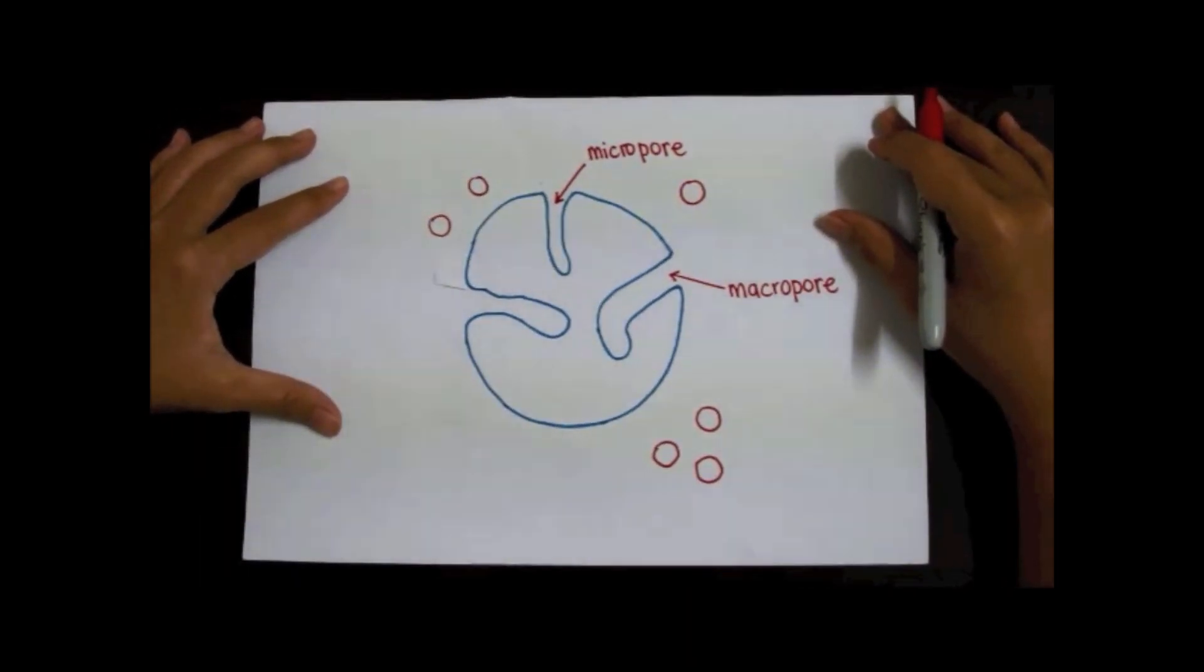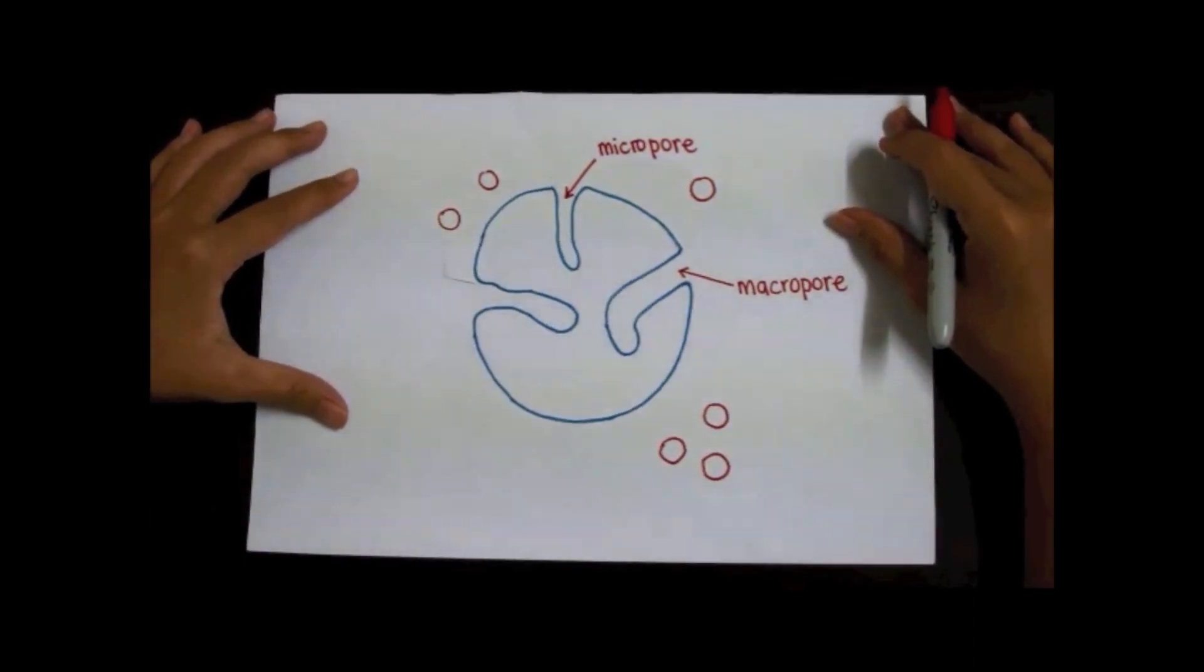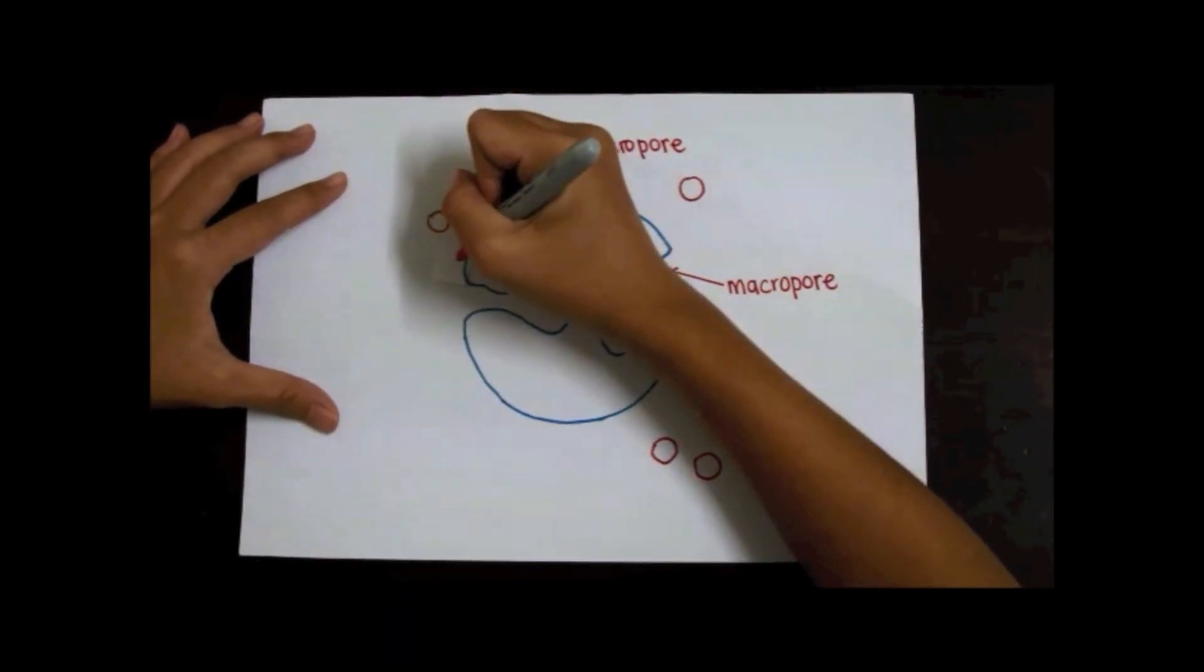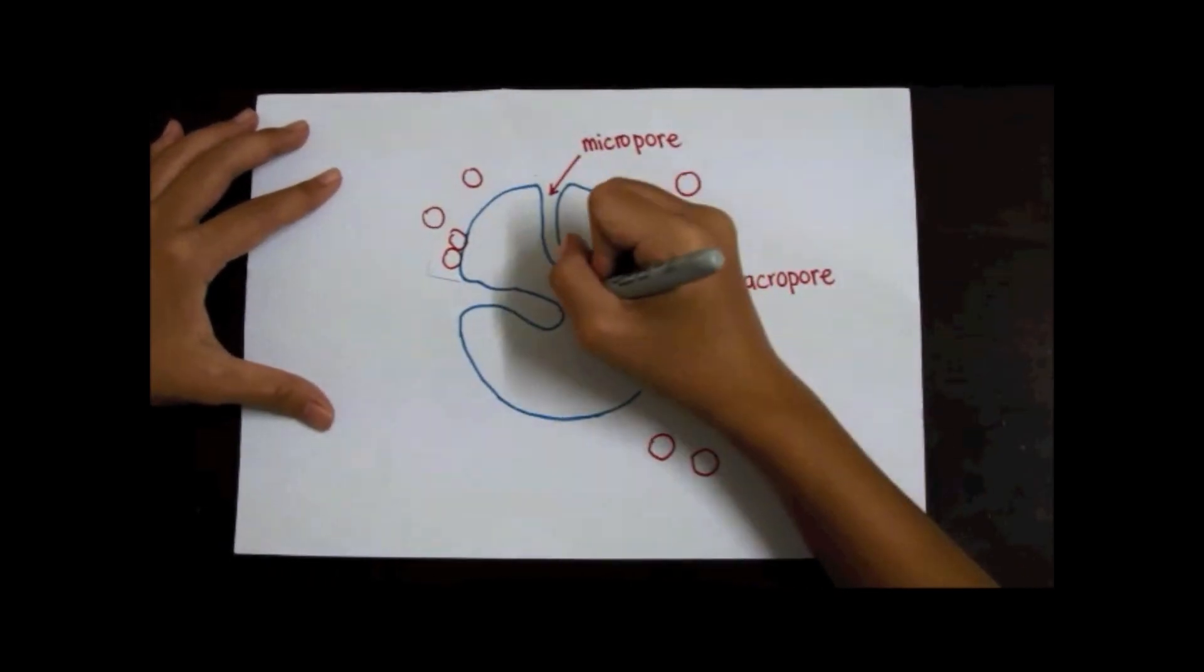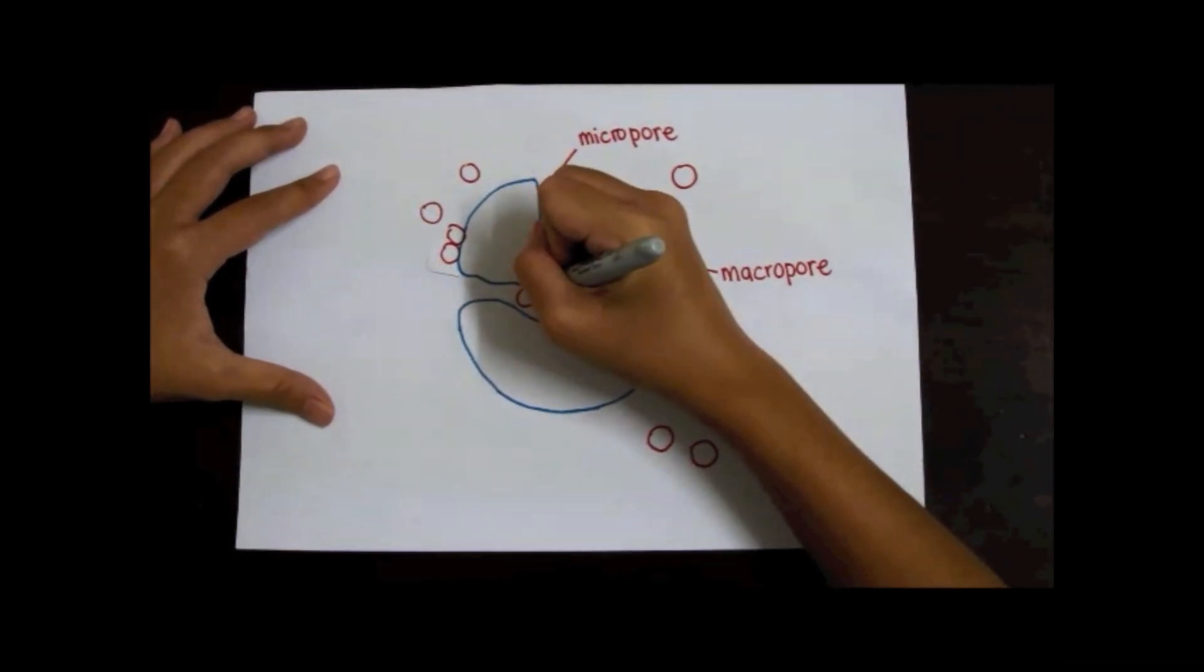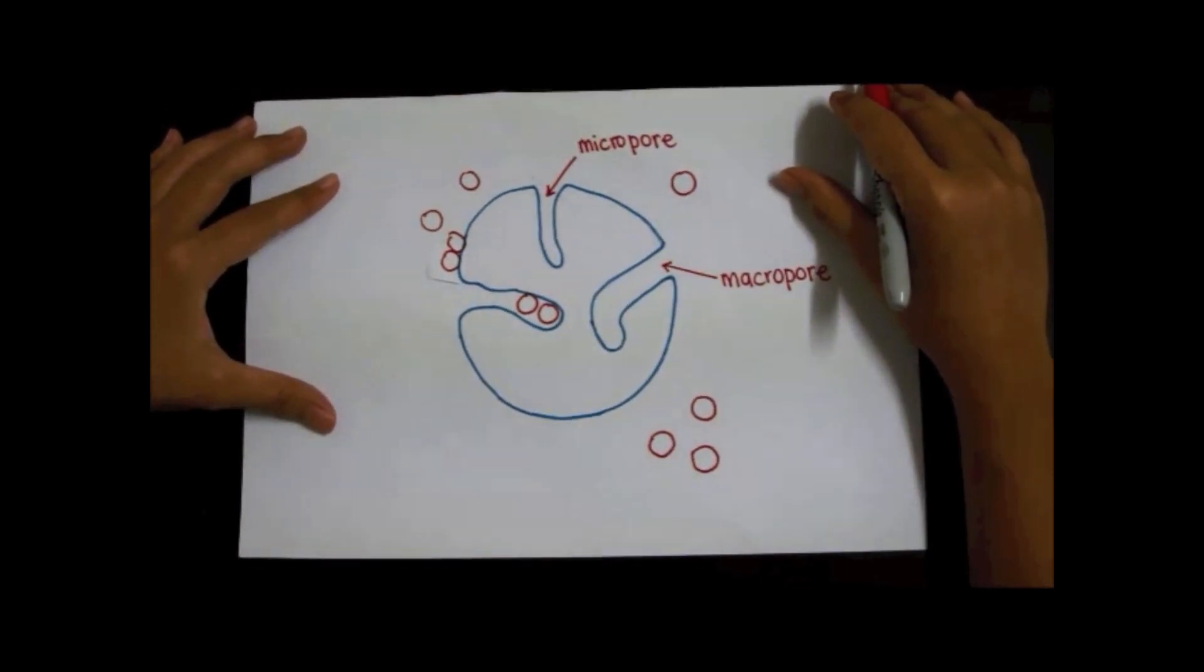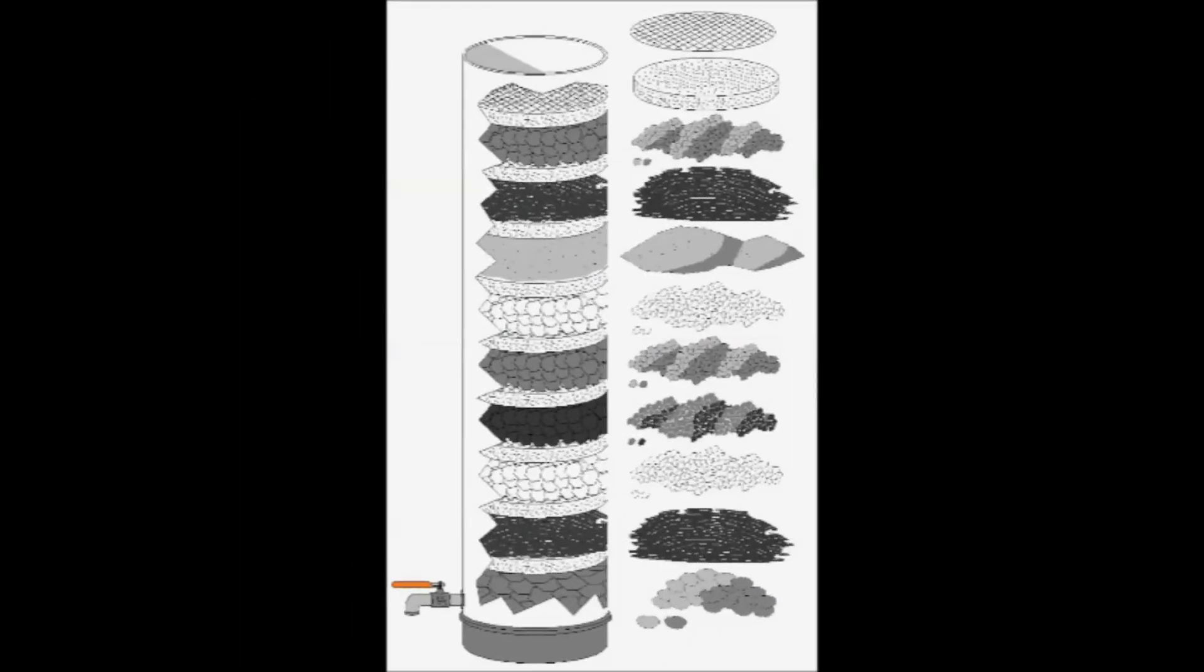These pores provide superb conditions for adsorption to occur since the activated charcoal can interact with many smoke particles. The smoke particles can either accumulate near the surface or conversely move into the charcoal. So this is how the activated charcoal removes the odor and smoke particles from the surrounding.